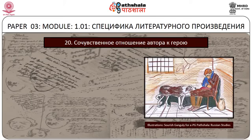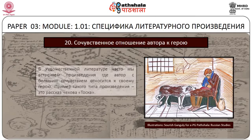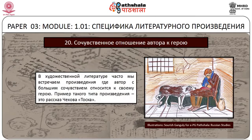Таким образом, индивидуальная судьба персонажей приобретает обобщающий характер. В художественной литературе часто мы встречаем произведения, где автор с большим сочувствием относится к своему герою. Пример такого типа произведения – это рассказ Антона Павловича Чехова «Тоска».